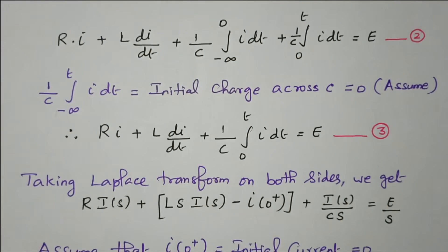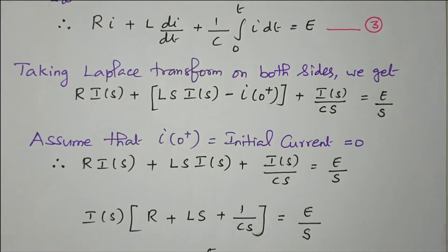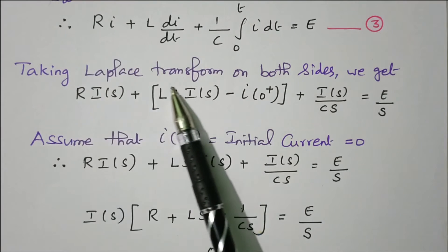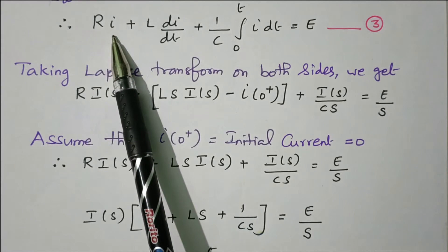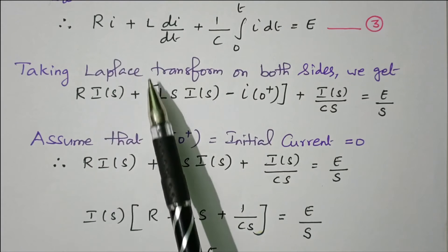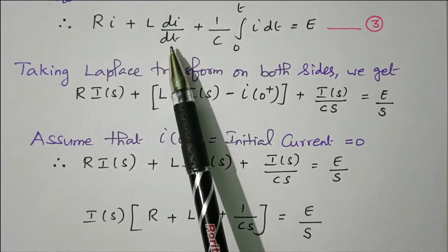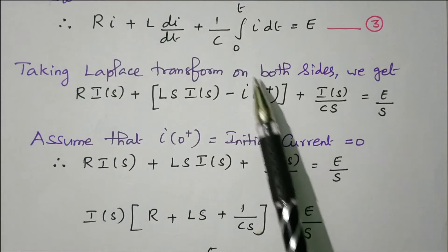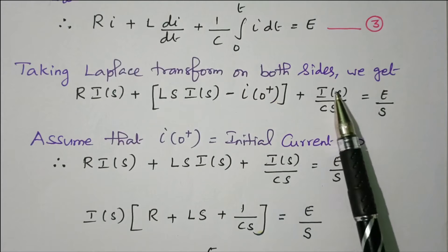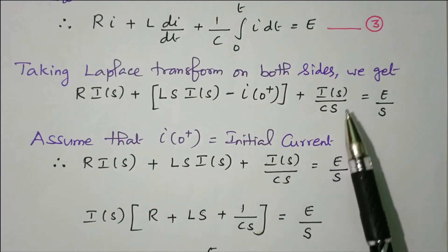Now we need to take the Laplace transform to convert from the time domain into the S domain. Taking the Laplace transform on both sides: R·I(S) + L·[S·I(S) − I(0+)] + (1/CS)·I(S) = E/S. Here I(T) transforms to I(S), and di/dt transforms to S·I(S) − I(0+). The integral (∫ i dt) transforms to I(S)/S.